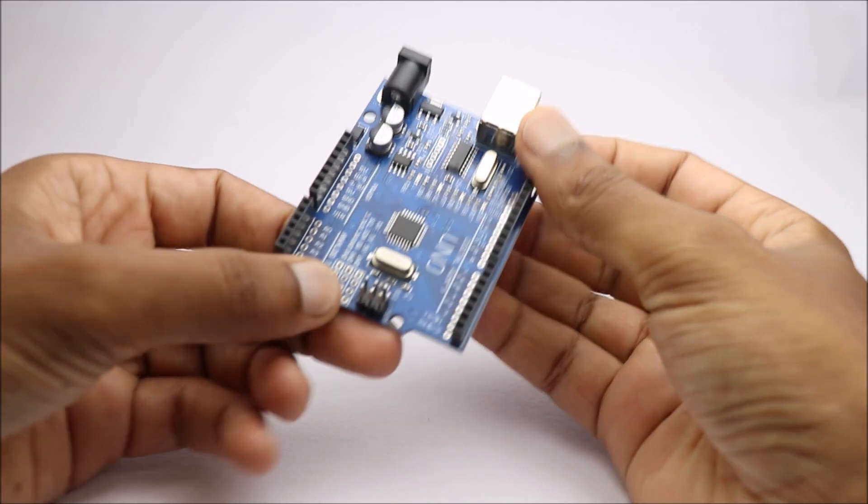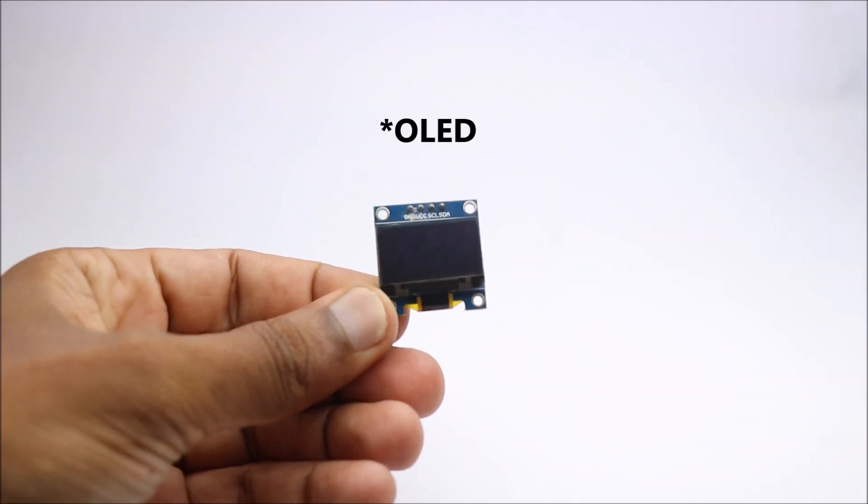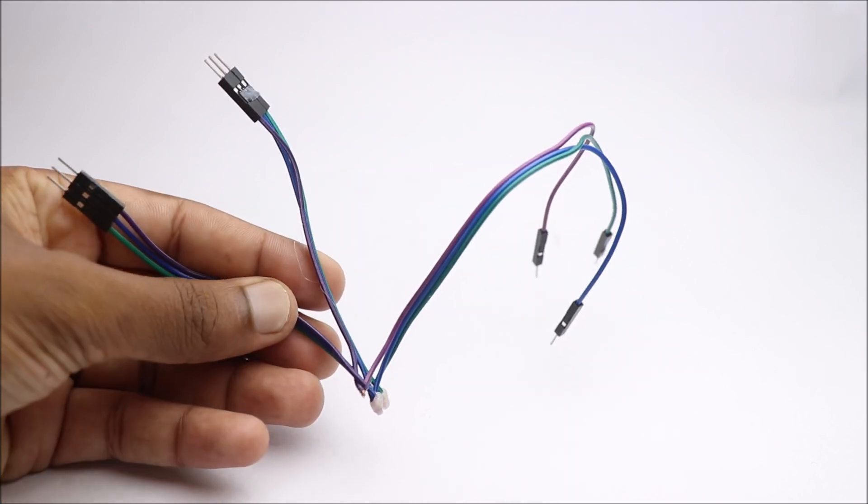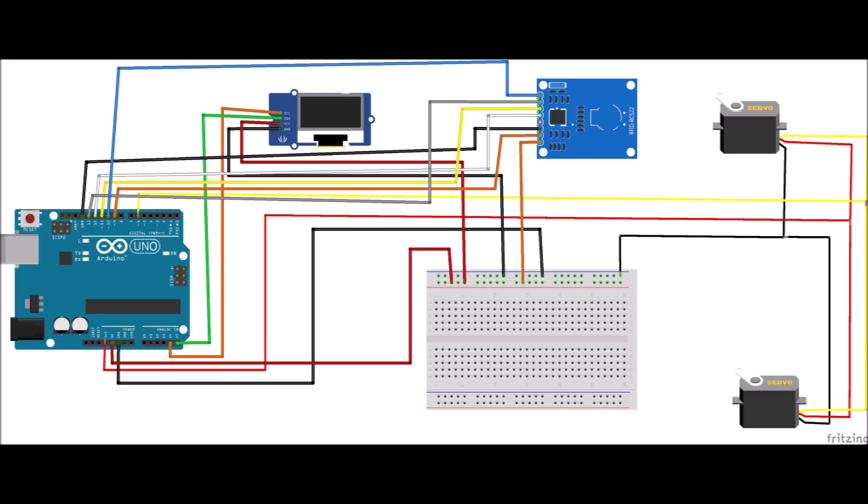To build this project you need Arduino Uno, two micro servos, a small breadboard, custom jumper wires, RFID module, and connecting wires. Here is the circuit diagram by which we will be connecting the components.